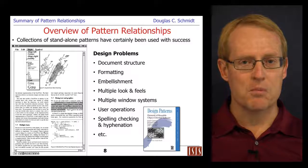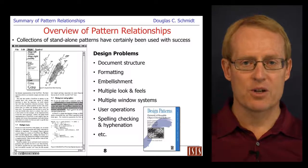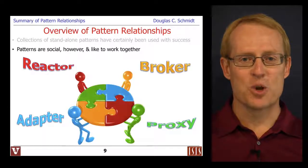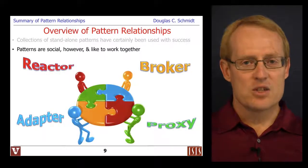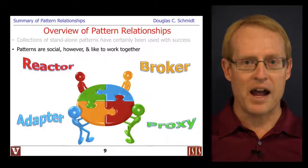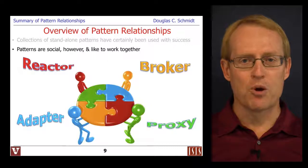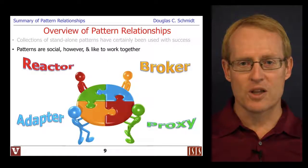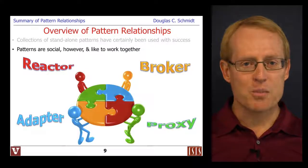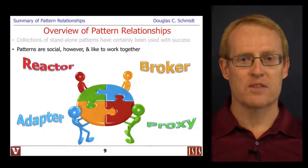However, if you look carefully at the description, they're describing those patterns individually, one at a time, resolving a particular design problem. What you find in practice is that patterns tend to be very social — they like to work together. When you look at sophisticated, significant, substantial designs, you'll see that these patterns often interact and collaborate. For example, broker always comes along with other patterns like proxy, adapter, or reactor, and that combination is what captures larger parts of the design space.